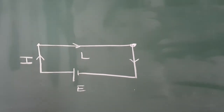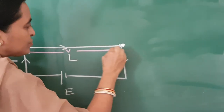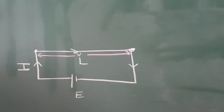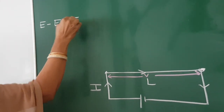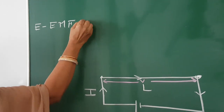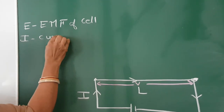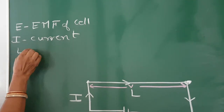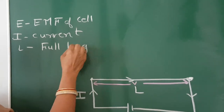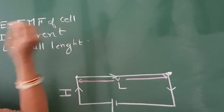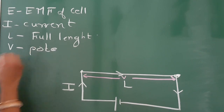We can write the potential difference V across the wire. E is the EMF — that is, the electromotive force — of the cell. I is the current flowing through the wire. L is the full length of the wire, and V is the potential difference across the wire AB.